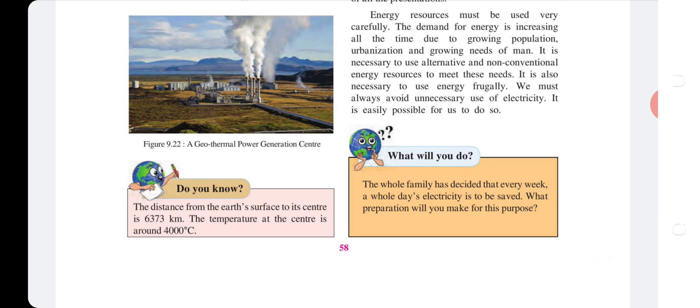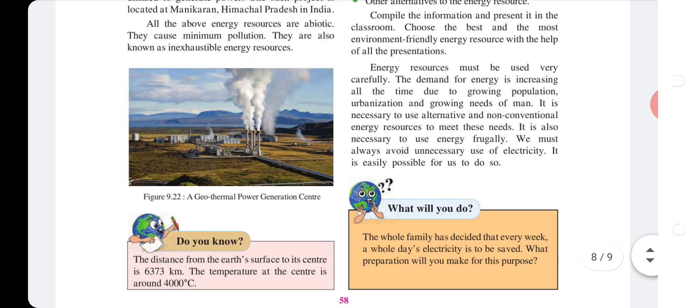Do you know: The distance from the earth's surface to the center of the earth is 6,373 kilometers, and the temperature at the center is around 4,000 degrees Celsius.